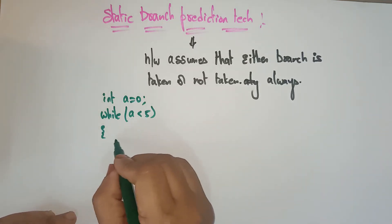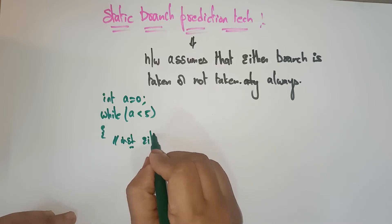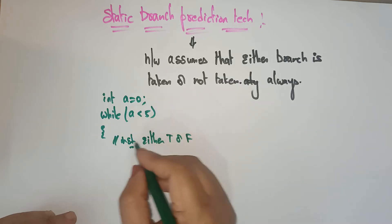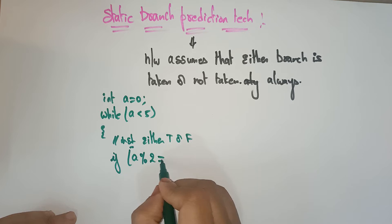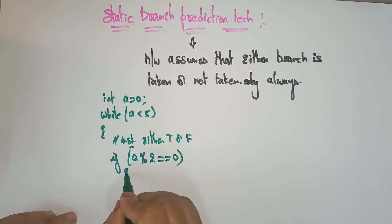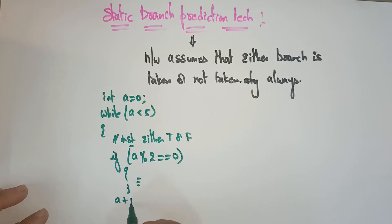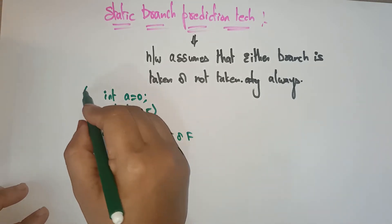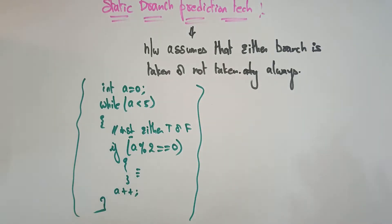So the branch instruction condition is either true or false. Inside the while loop, we are checking if a modulo 2 is equal to 0, then some instructions are executed and a is incremented. This is what the code looks like. Now let's see what static branch prediction is.